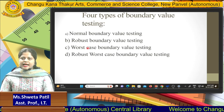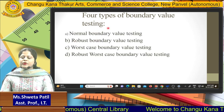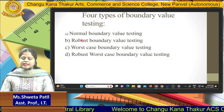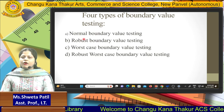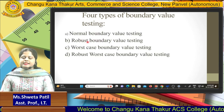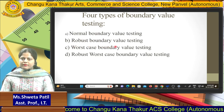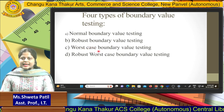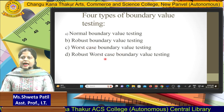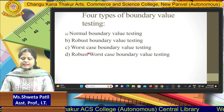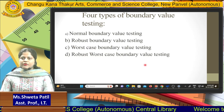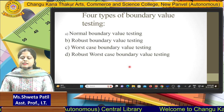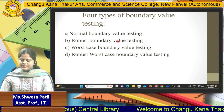In the next slide you can see there are four types of Boundary Value Testing. First is Normal Boundary Value Testing, second is Robust Boundary Value Testing, third is Worst Case Boundary Value Testing, and the fourth is Robust Worst Case Boundary Value Testing.